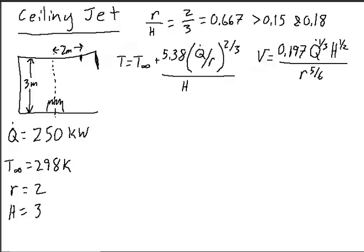Hello everyone, this video is going to go over how to use Alpert's correlation to determine the temperature and velocity inside of a ceiling jet at ceiling level some distance away from the center line of a fire.